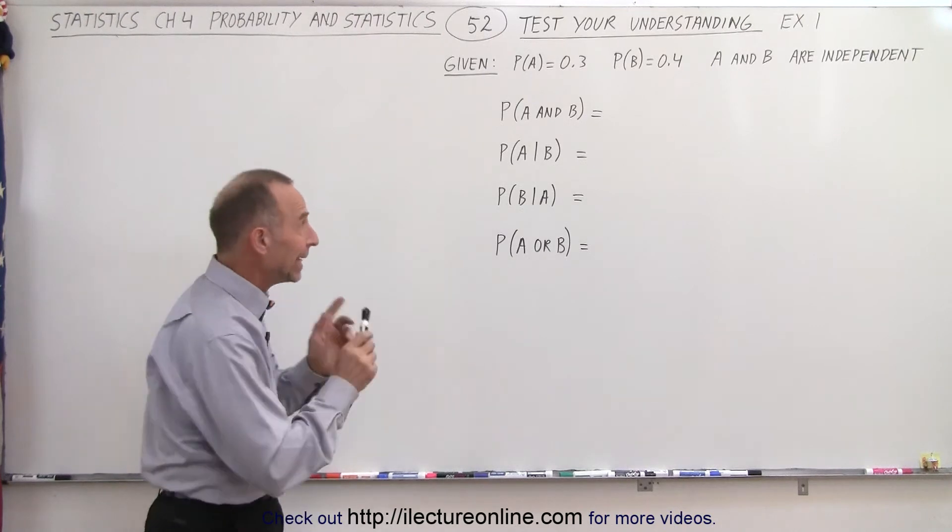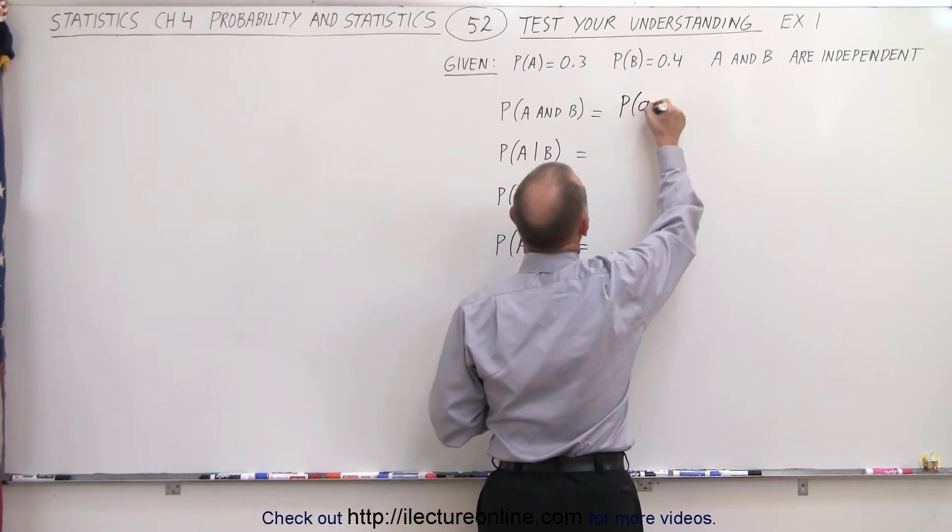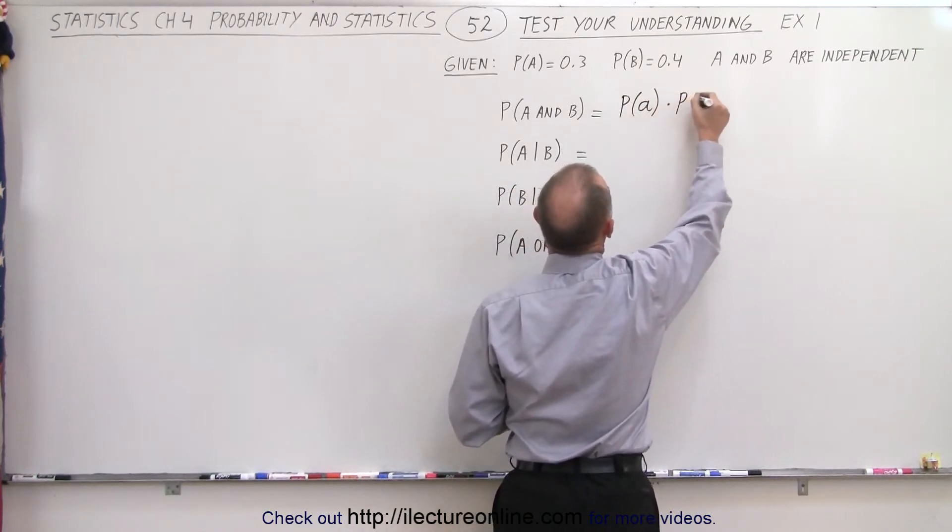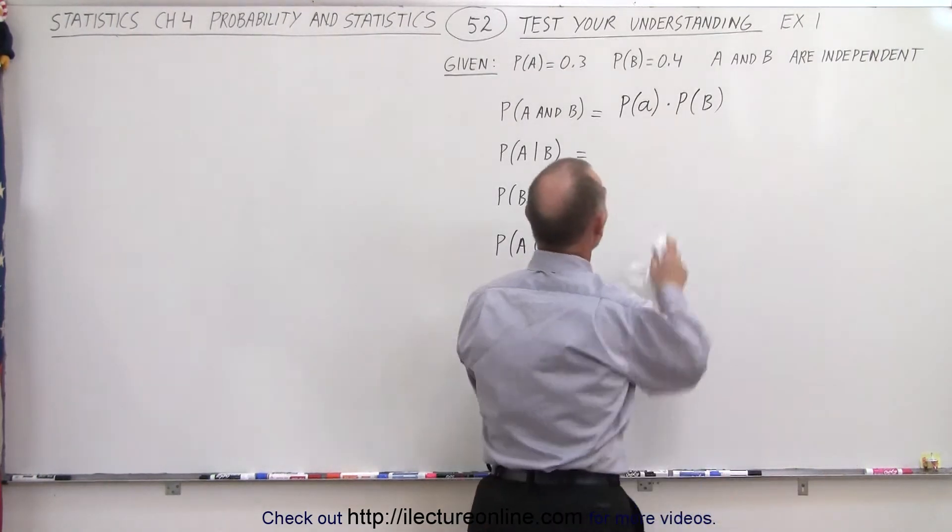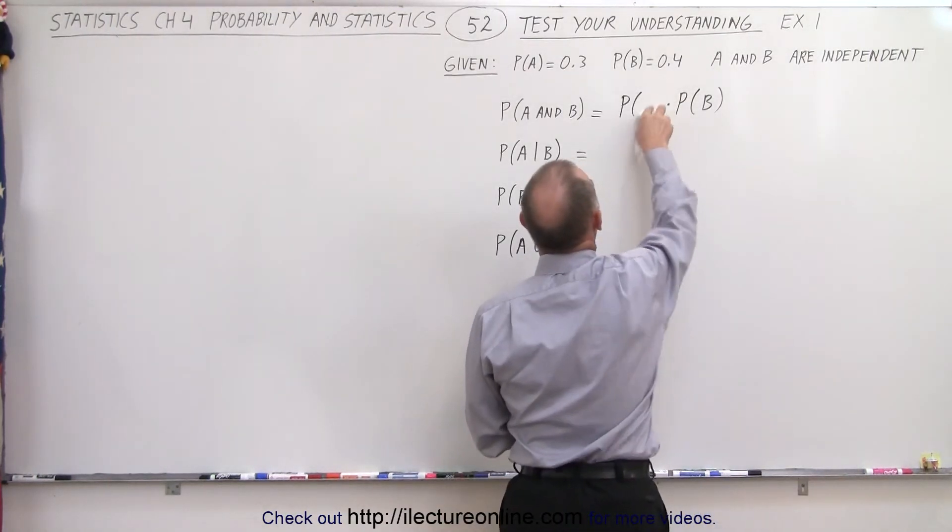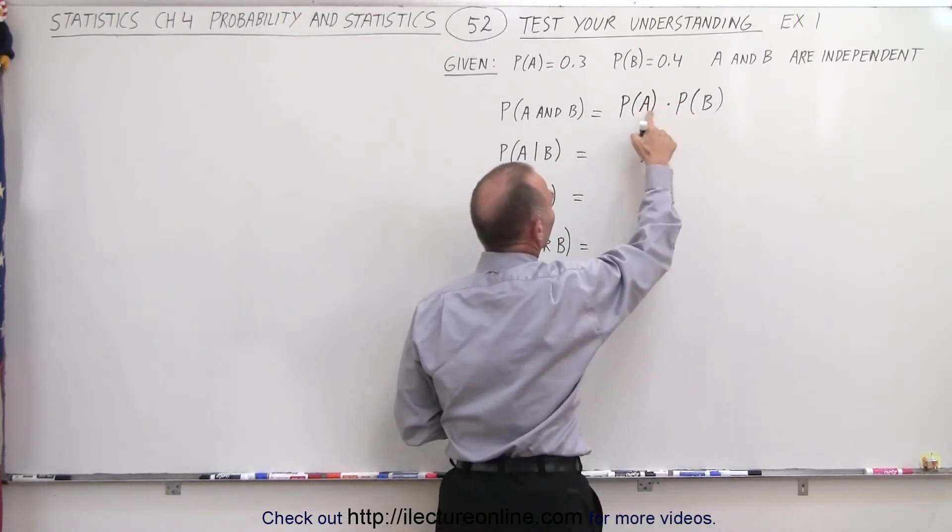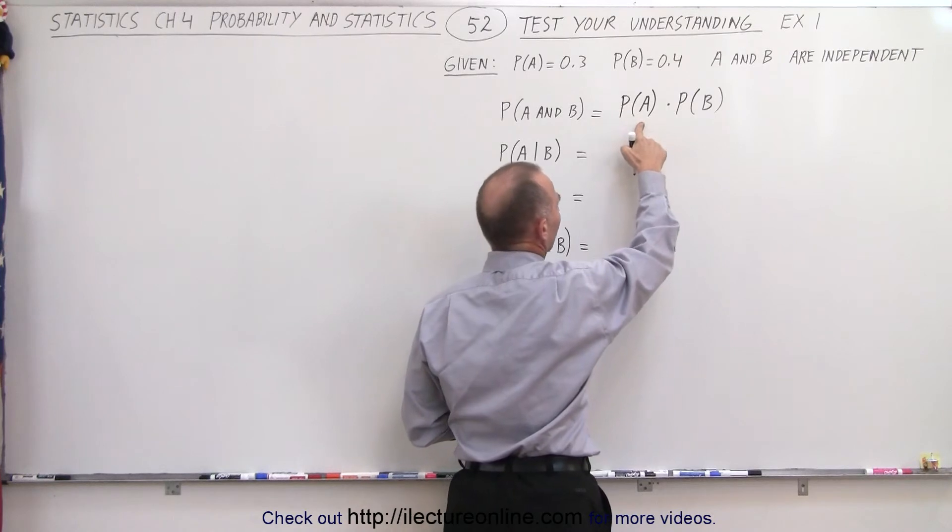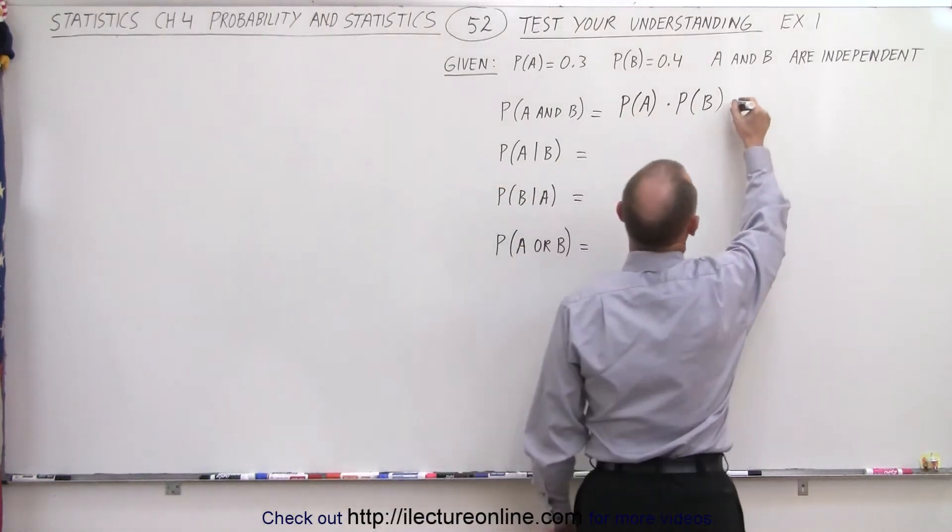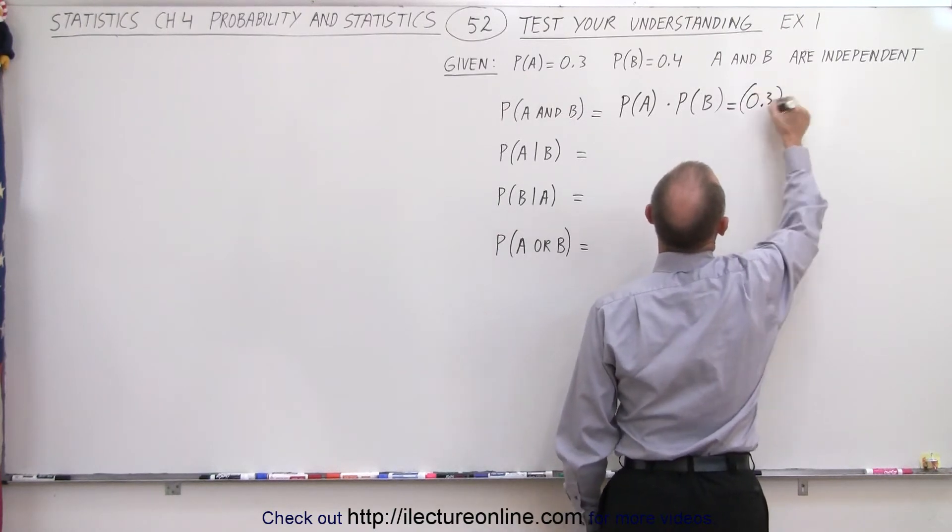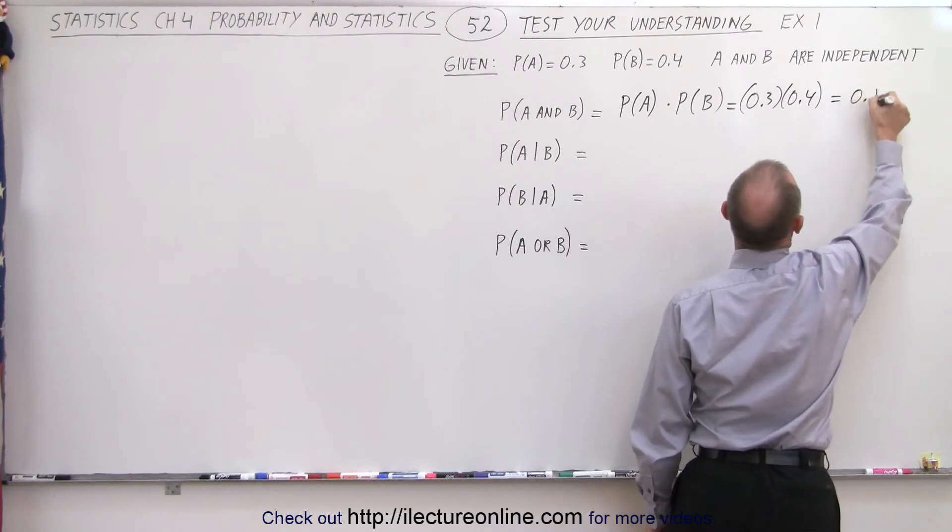Now if they are independent events, we can say that this must equal the product of P(A) times P(B). So it's simply the product of the probability of event A occurring times the probability of event B occurring. In this case, this equals 0.3 multiplied times 0.4, which is equal to 0.12.